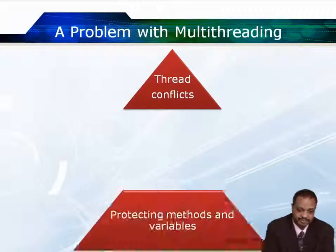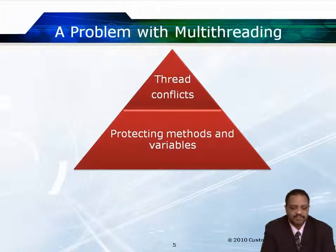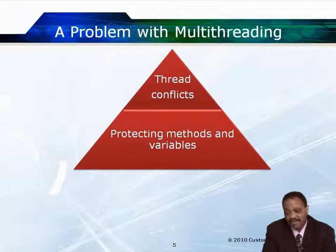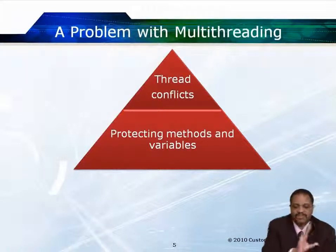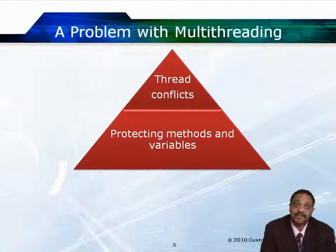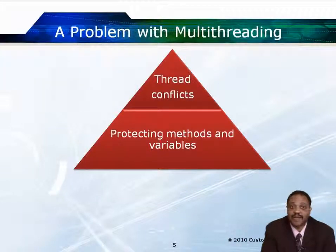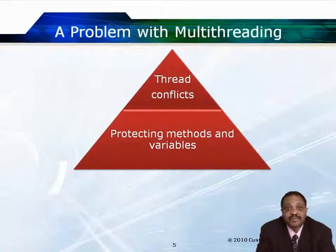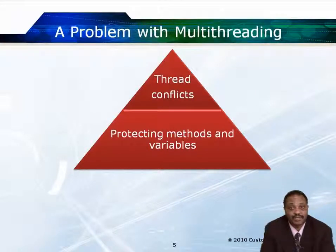There are some potential problems with doing multi-threading. When you're doing multi-threading, sometimes you have two or more threads trying to access the same pieces of data. If one thread looks at a particular variable and sees its value is, say, one, goes off and does its thing, some other thread might come around, look at that same piece of data, change it, and then when the first thread comes back, the value it thought was one is now two. So we can have thread conflicts because two or more threads are fighting over the same piece of data.